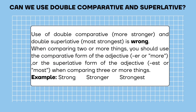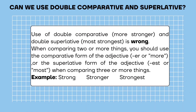Can we use double comparative and superlative? Use of double comparative — more stronger — and double superlative — most strongest — is wrong. When comparing two or more things, you should use the comparative form of the adjective, -er or more, or the superlative form, -est or most, when comparing three or more things. Example: strong, stronger, strongest.